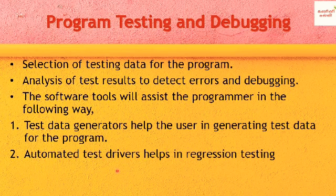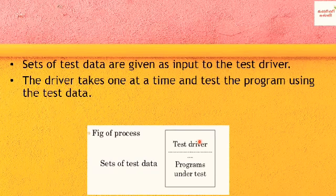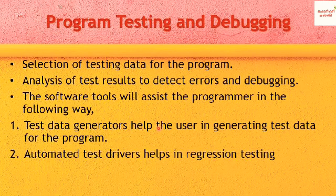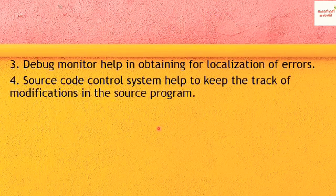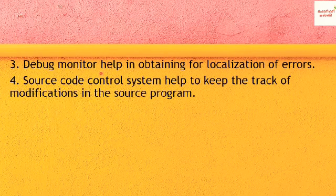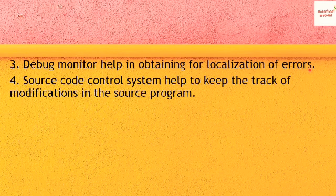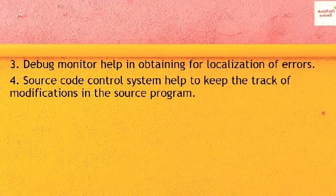Test drivers take one data at a time and give it to the program, producing test results. Tools for testing and debugging include the Debug Monitor, which we can also use. It helps in obtaining the localization of errors. The Debug Monitor can be used for dynamic debugging — we can use breakpoints and checkpoints. Up to those checkpoints, we can execute, and localization of errors can easily be done.